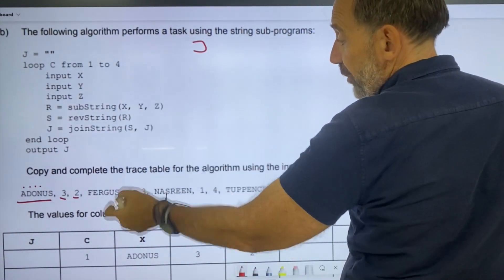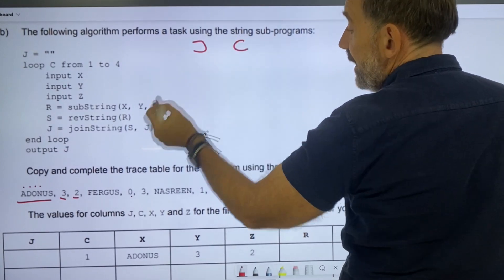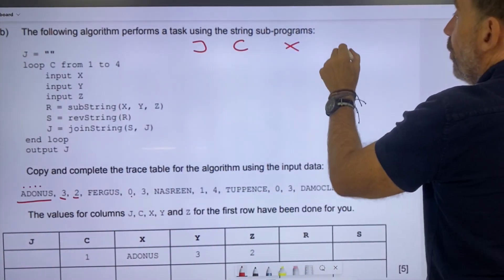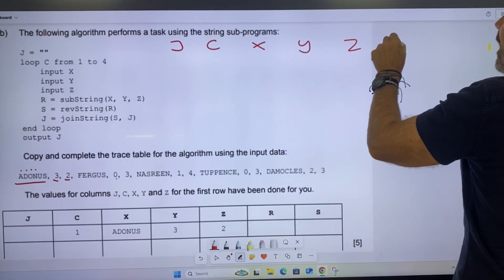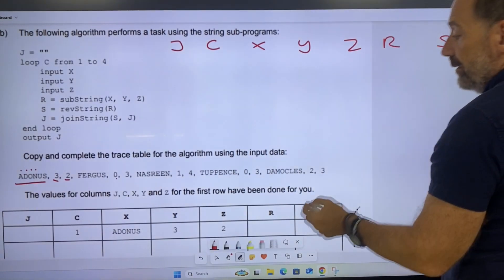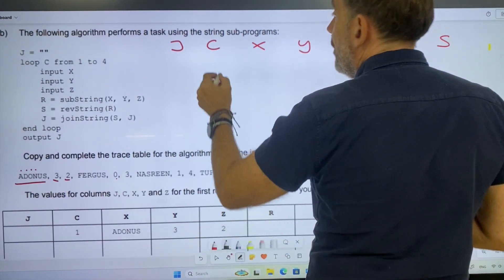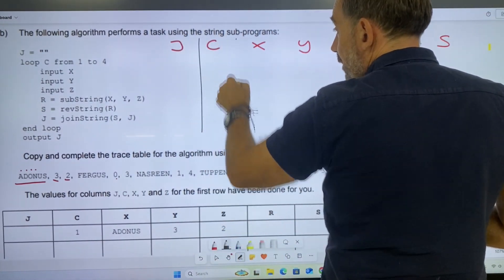Let's put this in: j, c, x, y, z, r, s. Z, r, s. Let me just put this in.